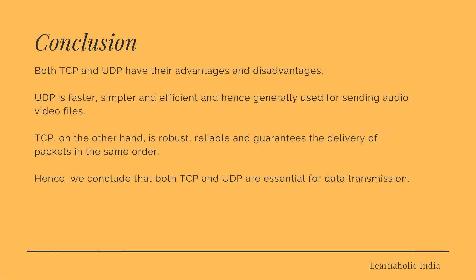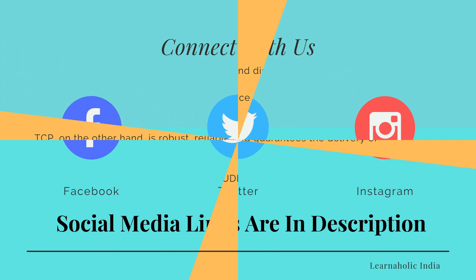In conclusion, both TCP and UDP have their advantages and disadvantages. UDP is faster, simpler, and efficient, and is generally used for sending audio and video files. TCP, on the other hand, is robust, reliable, and guarantees the delivery of packets in the same order. Hence, both TCP and UDP are essential for data transmission.